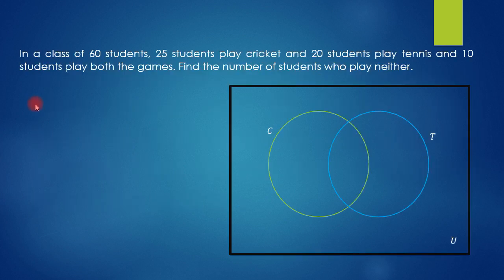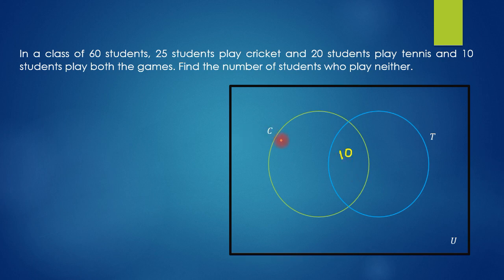For this problem, set C represents cricket players and T represents tennis players.